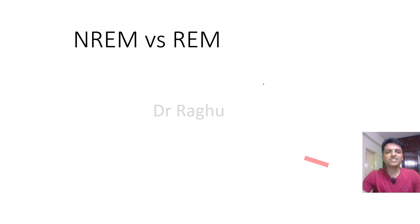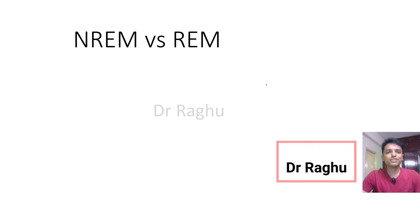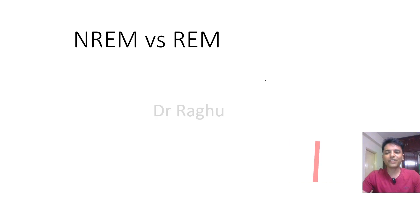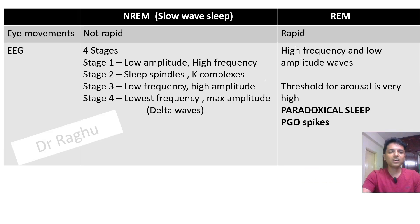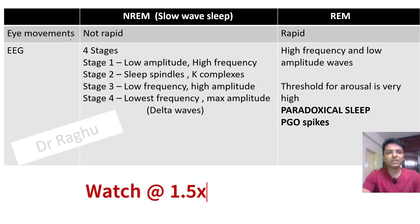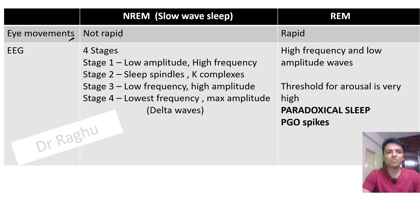In this video let's understand the differences between non-rapid eye movement and rapid eye movement sleep. The first point is of course the eye movements. In NREM sleep the eye movements are not rapid, and in REM sleep the eye movements are rapid.